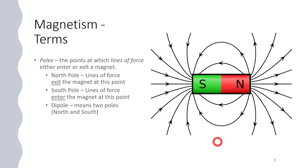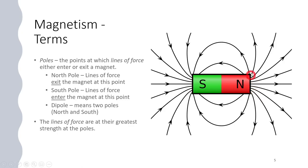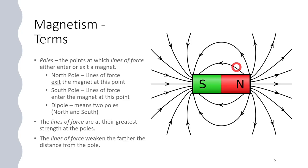Dipole just means two poles - in this case we label them north and south. The lines of force are the strongest at each pole, and you can see they're closer together there. The farther away they get from the pole, they're farther apart from each other, so they're not nearly as strong. As you get farther away from the magnet, the lines of force weaken.